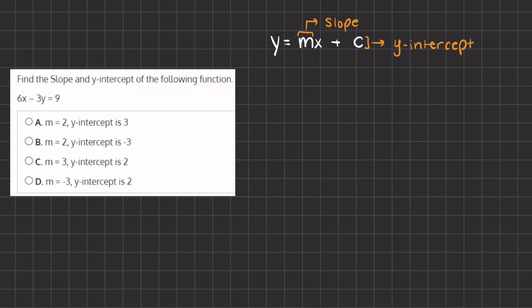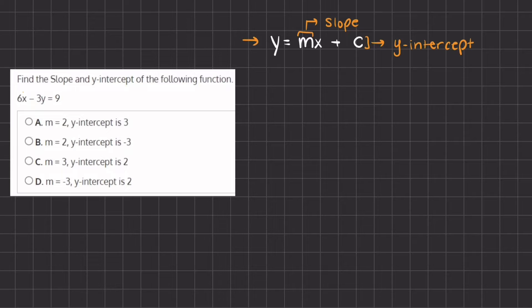In this video we are going to learn how to recognize our slope and our y-intercept in our linear functions. A linear function is represented by the formula y equals mx plus c, where m is our slope and c is our y-intercept.